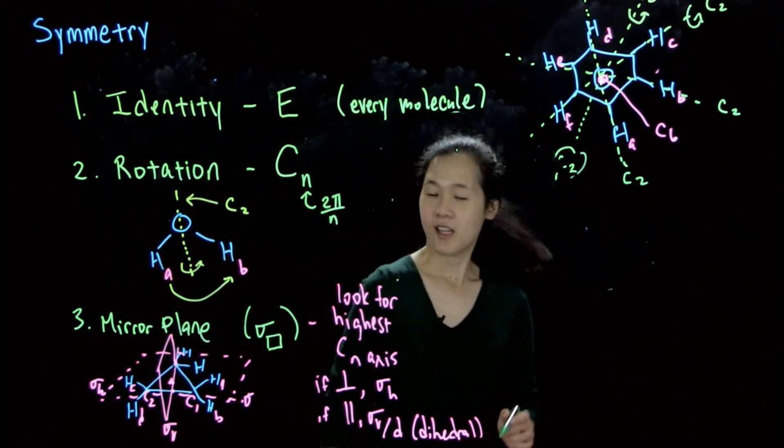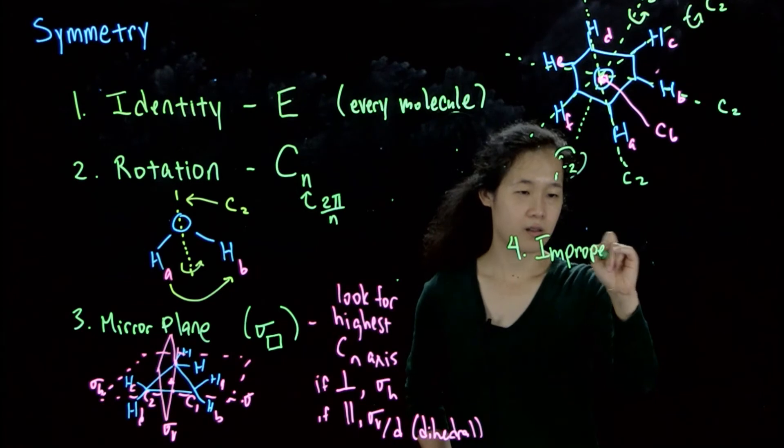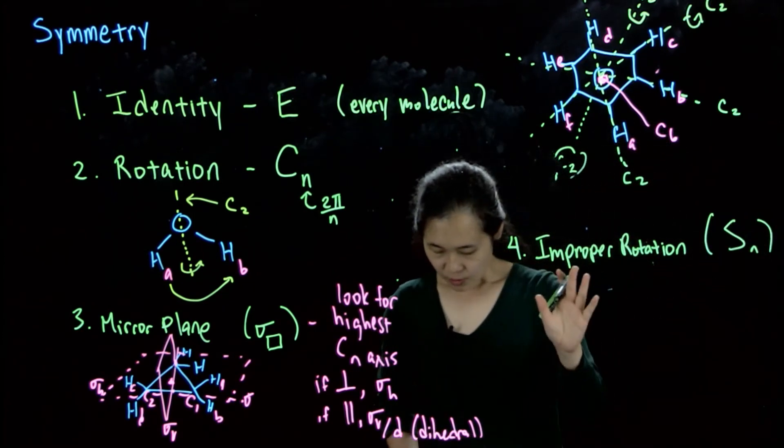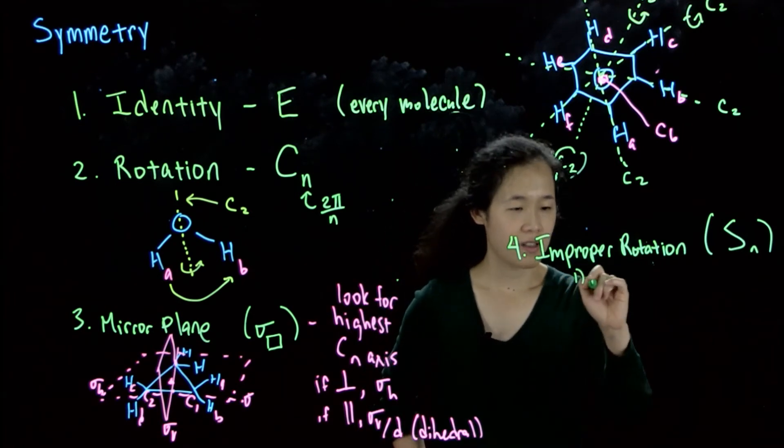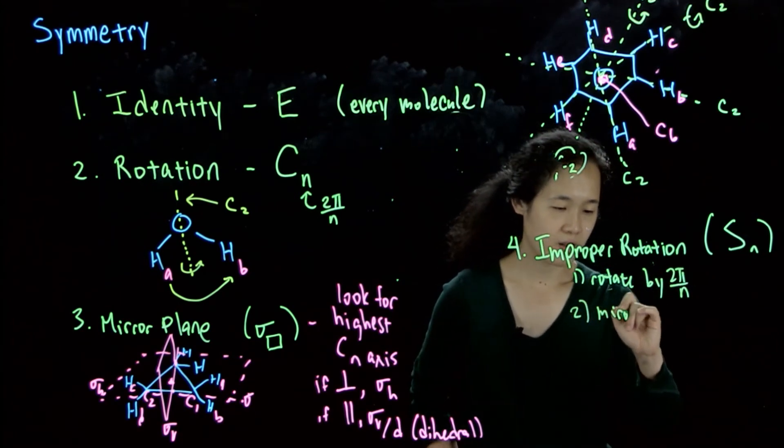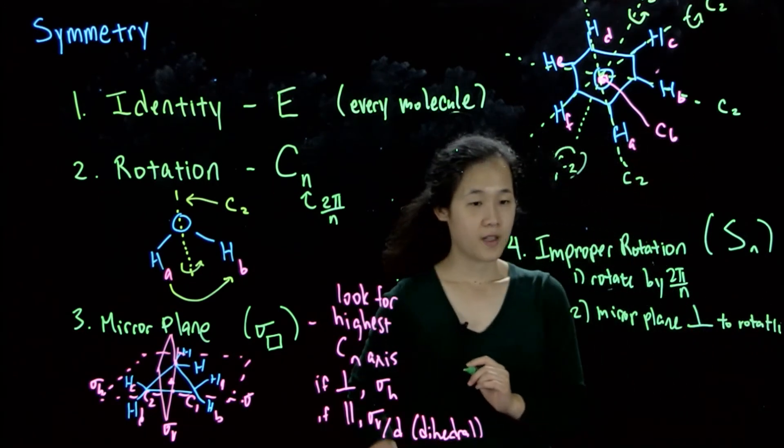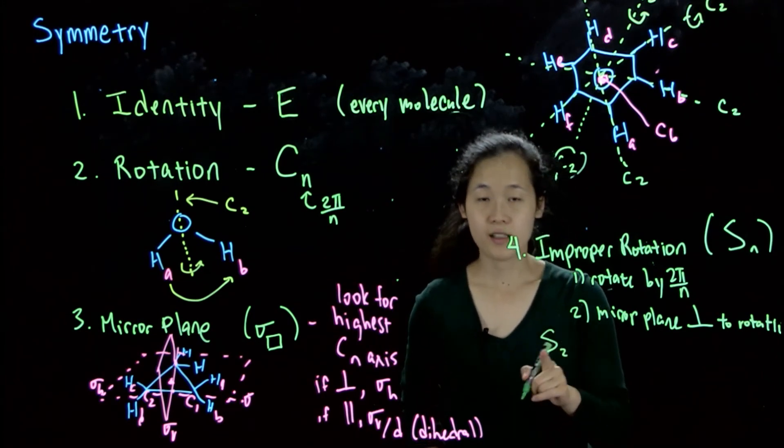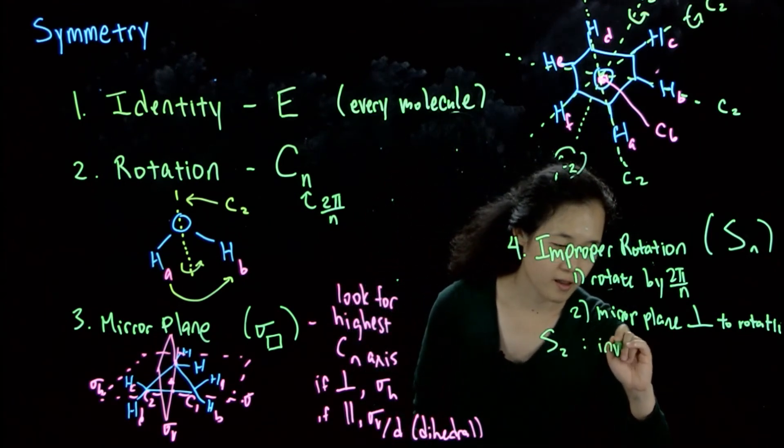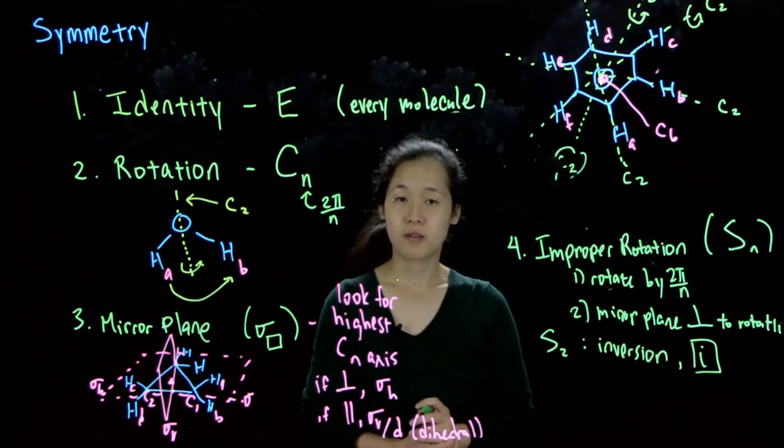So the last symmetry element is improper rotations. And the notation here is S sub n. And so what this means is you first rotate by 2 pi over n, and then do a mirror plane perpendicular to rotation. And I'll also note that S2 has a special notation. So S2, if I were to rotate by 180 degrees and then flip it in that plane, this is known as inversion, and this is also called I. So that's a special terminology that we'll talk a little bit about later and why it's important.